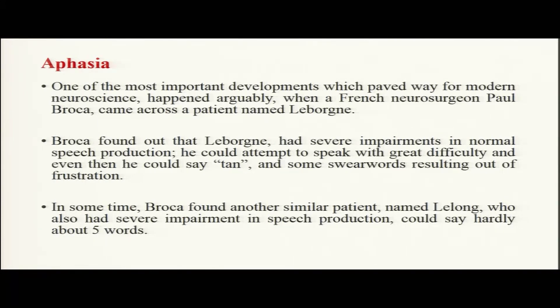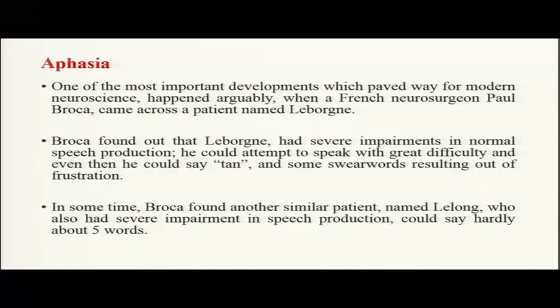Le Bourgne had severe impairments in production of speech. Even when he was trying to say something, he could not say much — at best, with a lot of effort, he could only say things like 'TAN.' That is why in a lot of neuropsychology and neuroscience he is known as TAN. He could utter TAN and maybe some swear words out of frustration, but majorly had very severe impairments in speech production.